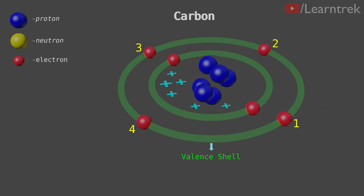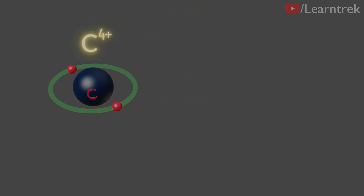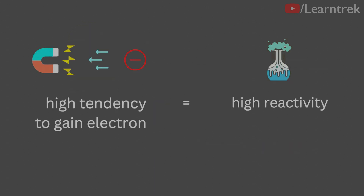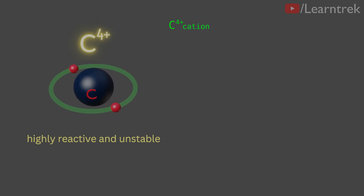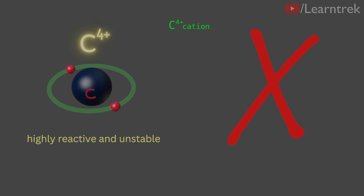However, if all four valence shell electrons are removed, then carbon will become a C4+ cation. This C4+ cation with four positive charges will have a very high tendency to gain electrons. We have studied that elements which have a high tendency to gain electrons are highly reactive. Hence, the C4+ cation will be highly reactive and very unstable in nature. For that reason, the carbon C4+ cation is not possible.